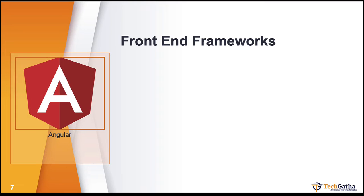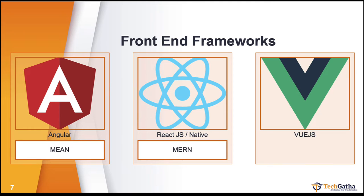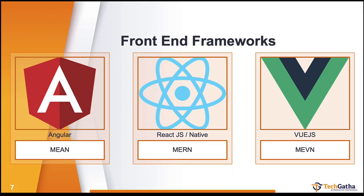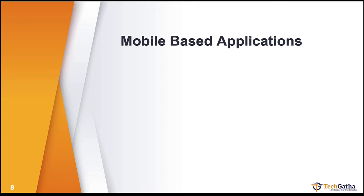Front-end frameworks are built over JavaScript and include Angular, which comes under the MEAN stack; React, under the MERN stack; and Vue.js under the MEVN stack. In these stacks, M is MongoDB, E is Express, and N is Node.js runtime environment. Angular, React, or Vue communicate with Express, which in turn communicates with MongoDB.